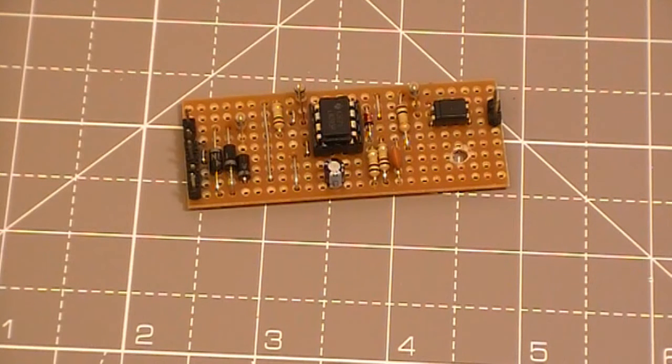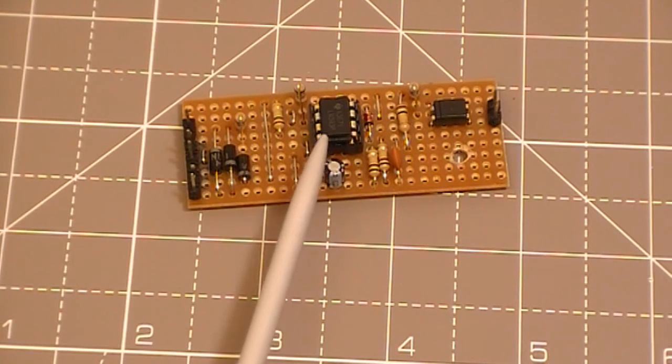Basically what we have here is an input end and an output end. The input end takes the DCC track voltage here and here, and outputs it to the track here and here. When any current is taken, i.e. there is a loco on the track or even a brake van with a flashing light for instance, these two diodes here will produce a voltage drop.